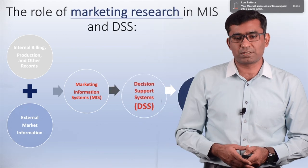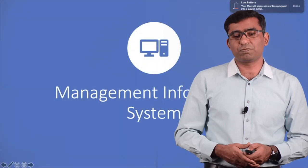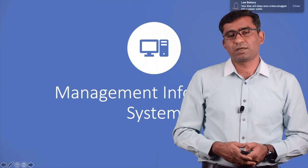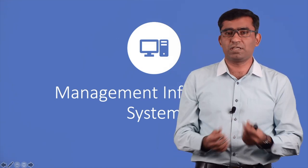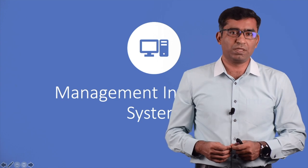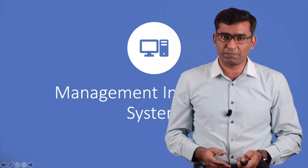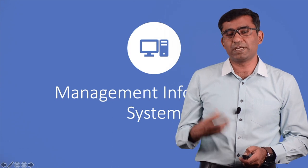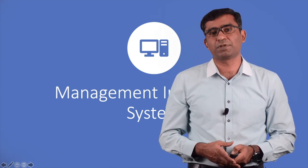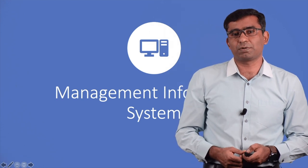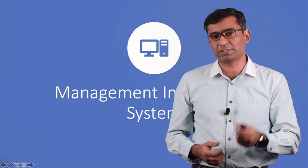Marketing information system is the utilization of information collected from the market internally or externally. It is an organizational system where information flowing into the organization is used for decision making. The main components of this system are computers, hardware, software, and the users who operate it.